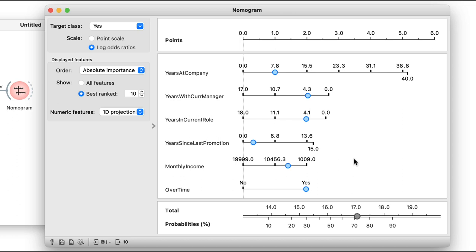Do notice that the nomogram turns the product of each feature and corresponding weight into a point scale. For instance, working overtime contributes two points. Then all these points are summed up, representing the distances from the decision boundary. In our case, we get about 17, which using the logistic function means a probability of 70%. Nomograms are a great way to graphically represent a logistic regression model.